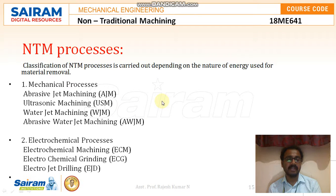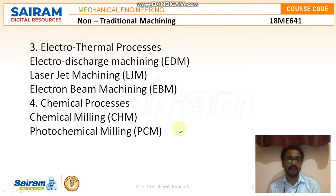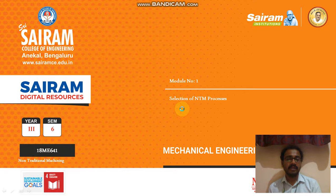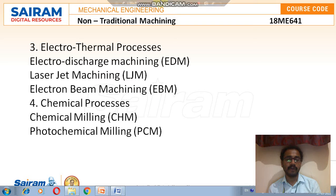To summarize the classification of non-traditional machining processes based on the nature of energy used: under mechanical processes we have abrasive jet machining, ultrasonic machining, water jet machining, and abrasive water jet machining; under electrochemical processes we have electrochemical machining, electrochemical grinding, and electro jet drilling; under electro-thermal processes we have electro discharge machining, laser beam machining, and electron beam machining; and under chemical processes we have chemical milling and photochemical milling. With this we wind up this video, and the remaining topics will continue in the next video. Thank you.